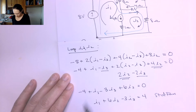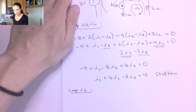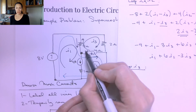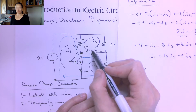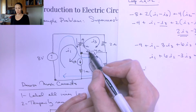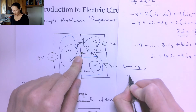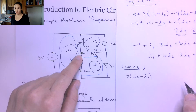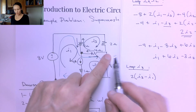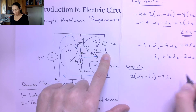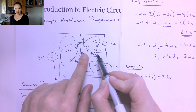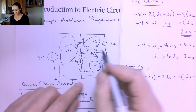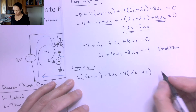Now let's write our equation for loop 3. Suppose I start at the bottom corner and walk around this I3 loop, considering the direction of I3 to be the positive direction. First I encounter the 2-ohm resistor — this is 2 times (I3 minus I1). Then I continue around to the next 2-ohm resistor: this is 2 times I3 since I3 is the only current through it. Then the 4-ohm resistor gives plus 4 times (I3 minus I2). Now I'm back where I started, so this equation equals zero.